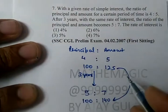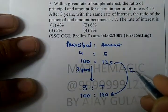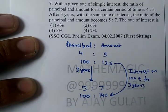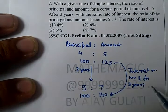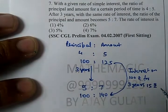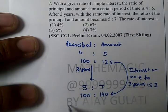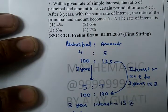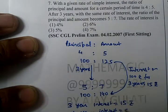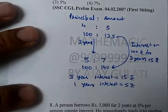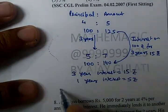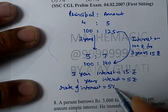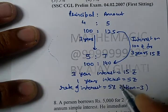So what happened in 3 years? Interest on 100 rupees for 3 years — how much is the interest? 15 rupees. So what is the interest in 1 year? 5 rupees. That gives us option number three.